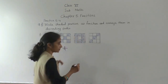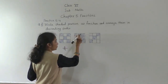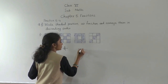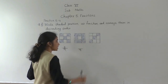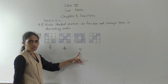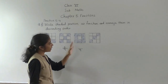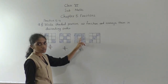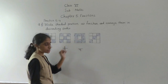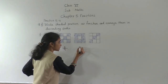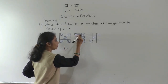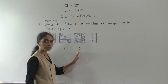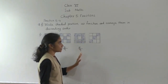Now in this figure, total parts are 9. See: 1, 2, 3, 4, 5, 6, 7, 8, 9 — 9 parts are total parts. From that how many parts are shaded? Only one part is not shaded, so 8 parts are shaded. Count it: 1, 2, 3, 4, 5, 6, 7, 8 — 8 parts are shaded.